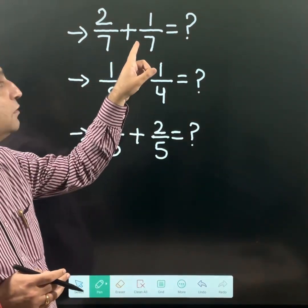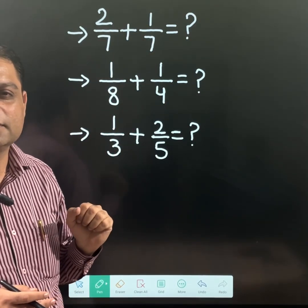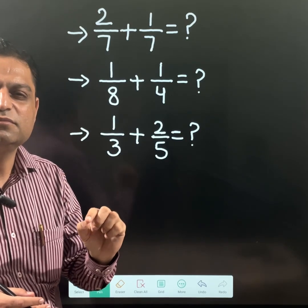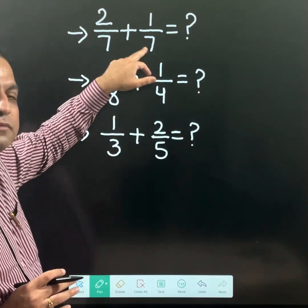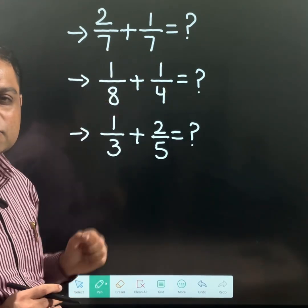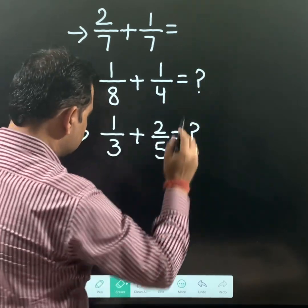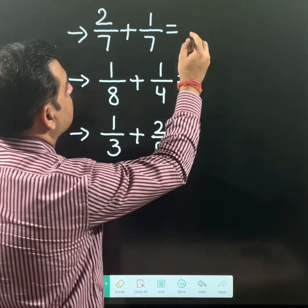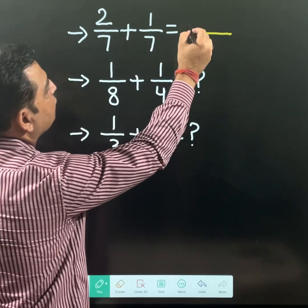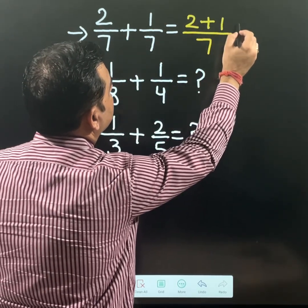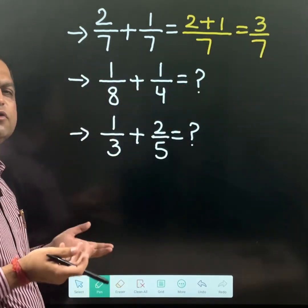First, we have selected one example: 2 over 7 plus 1 over 7 where the denominator is the same. When the denominator is the same, most students do it very well because when the denominator is the same, like here 7 and 7, what we need to do is just keep the denominator the same as 7 and just add both numerators like 2 and 1. The final answer is 3 over 7.